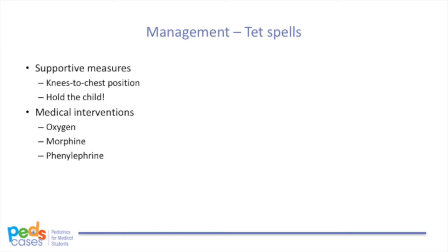Next are the medical interventions. 1. Supply oxygen — this is important because low oxygen saturation is what's causing the cyanosis. 2. Morphine can help calm the child and also reduce pulmonary vascular resistance. 3. Phenylephrine, an alpha-1 adrenergic receptor agonist, is sometimes used in the hospital setting to increase systemic vascular resistance, therefore promoting blood flow through the pulmonary tract to the lungs for oxygenation.